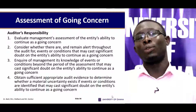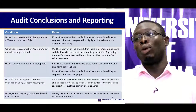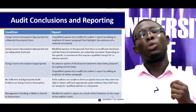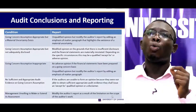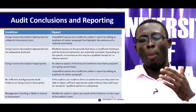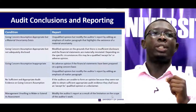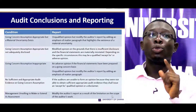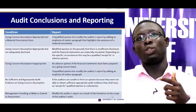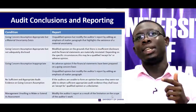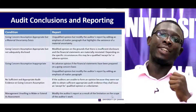These are the four main responsibilities of the auditor when it comes to going concern. Now let's look at certain conditions and the type of report the auditor should issue. Condition one: going concern assumption is appropriate but a material uncertainty exists — the auditor should issue an unqualified opinion but modify the auditor's report by adding an emphasis of matter paragraph highlighting the material uncertainty. Condition two: going concern assumption is appropriate but not adequately disclosed — the auditor should issue a modified opinion on grounds of insufficient disclosure. Depending on circumstances, this may be a qualified or adverse opinion.